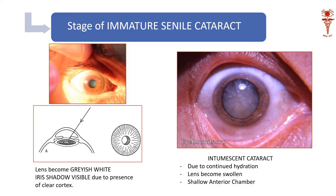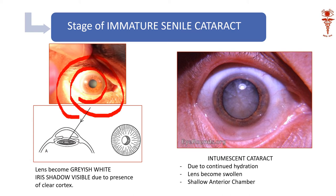Then we are at an immature cortical cataract — this will be the most common clinical case you will present; this is the exam case for you. They will ask you immediately how you say it is immature. Then you will have to say: 'Sir, I am seeing an iris shadow.' You can nicely see that iris shadow inside the pupil. The iris shadow is formed because in immature cortical cataract, not all the lens fibers are opaque — few are transparent, few are opaque. The transparent lens fibers reflect the image of the iris, and we see the iris shadow.